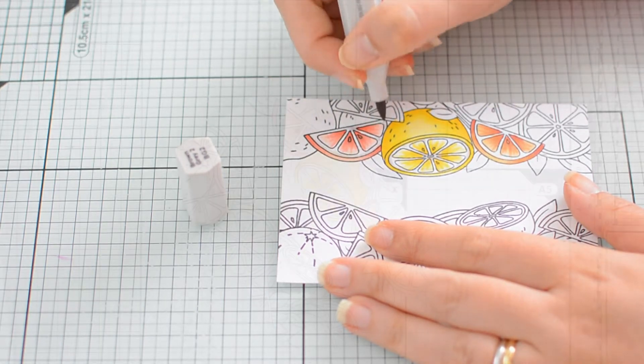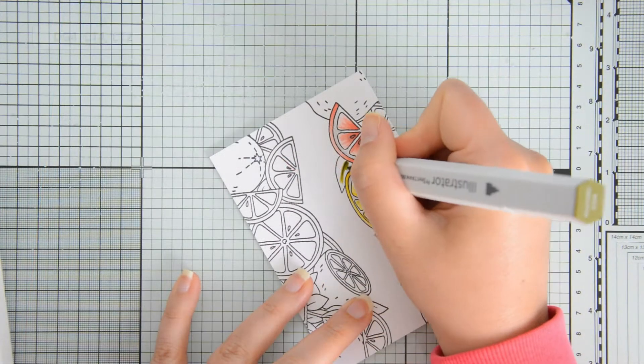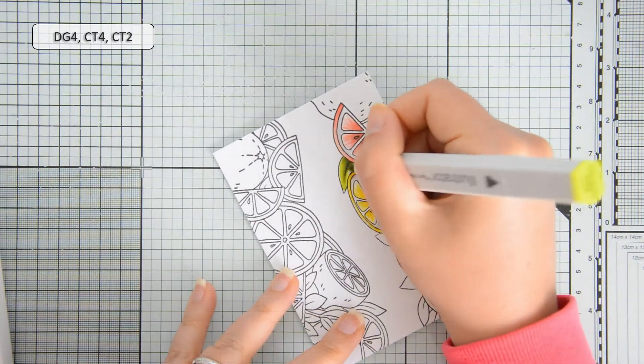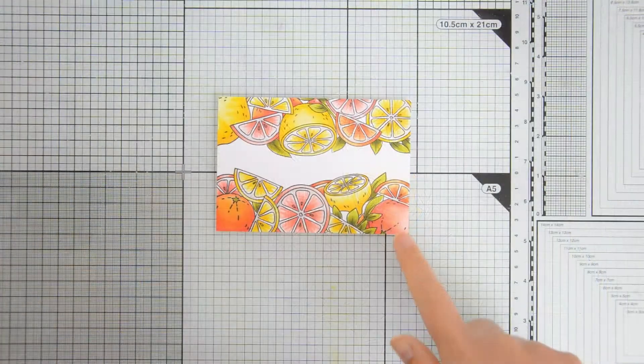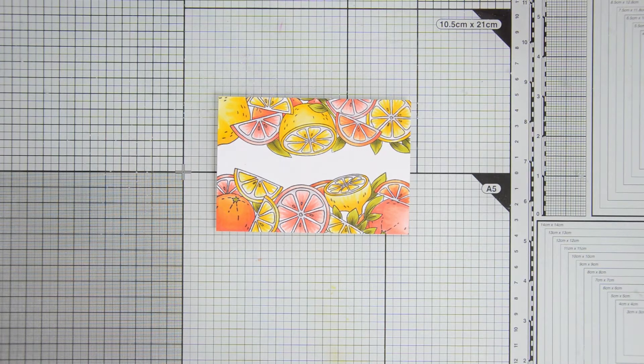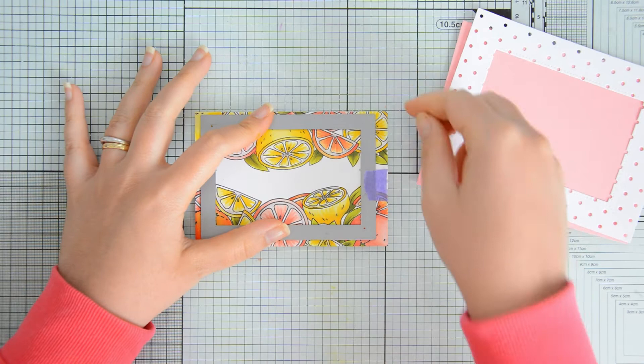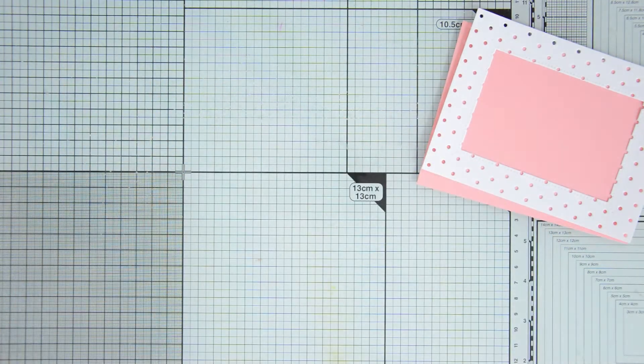I blended the white areas of the citruses with a warm gray marker and then I used some greens for the leaves. I finished the coloring off camera and this is the final result. Don't worry, it didn't take too long. It seems like there is a lot of coloring but it was rather quick.